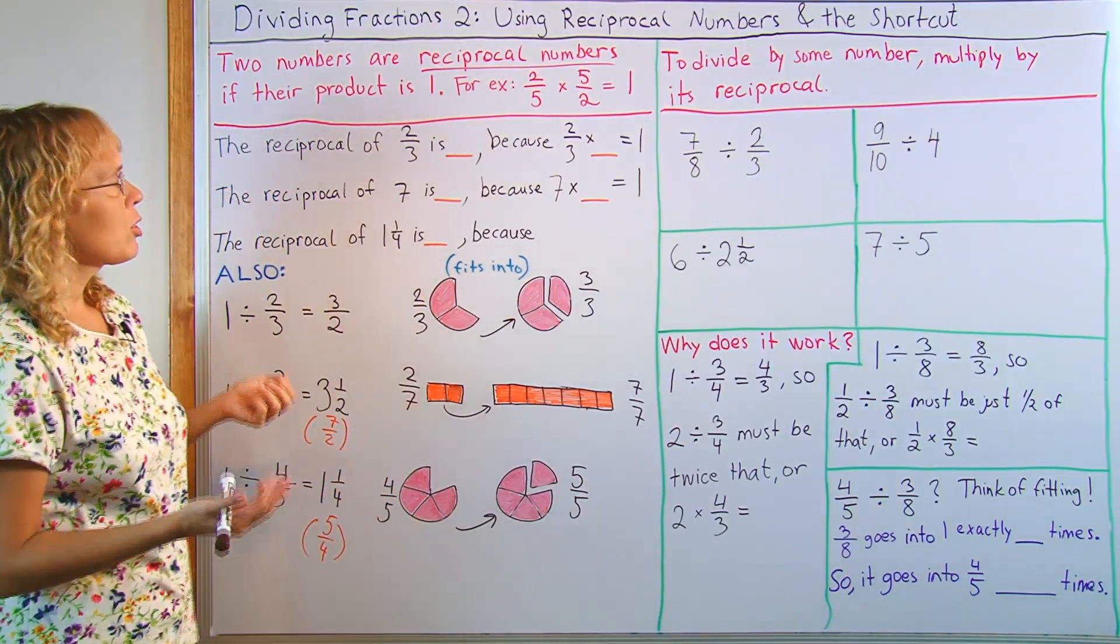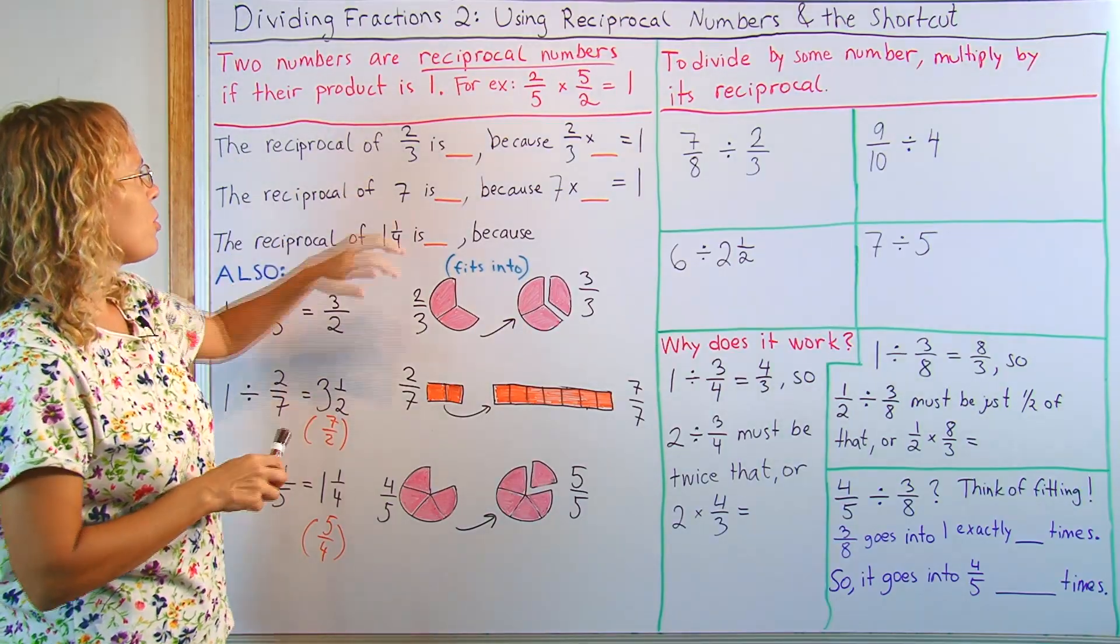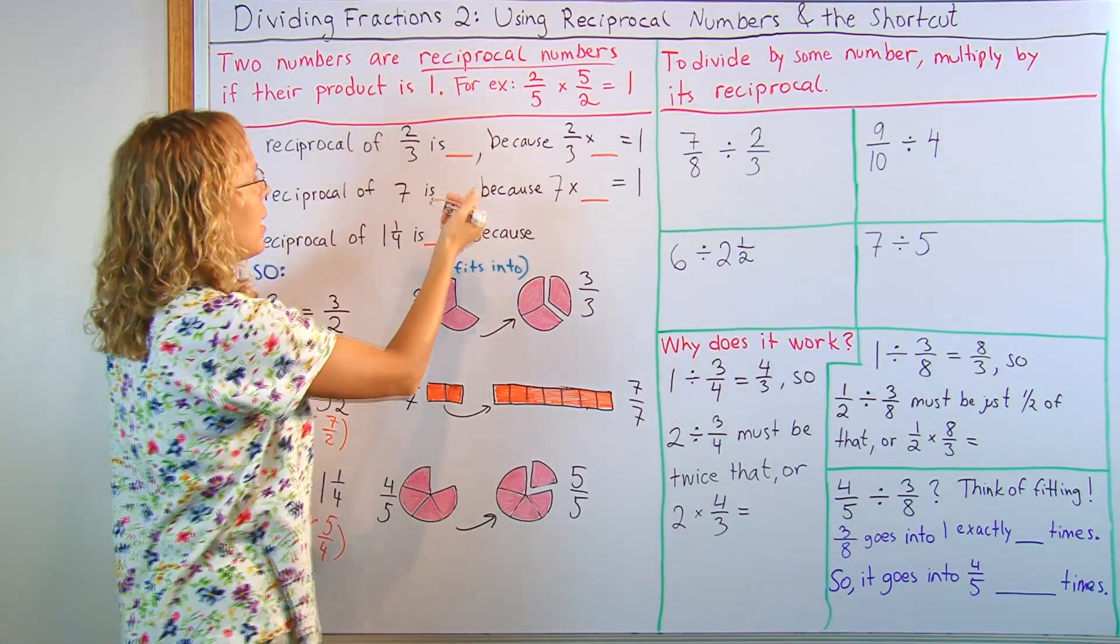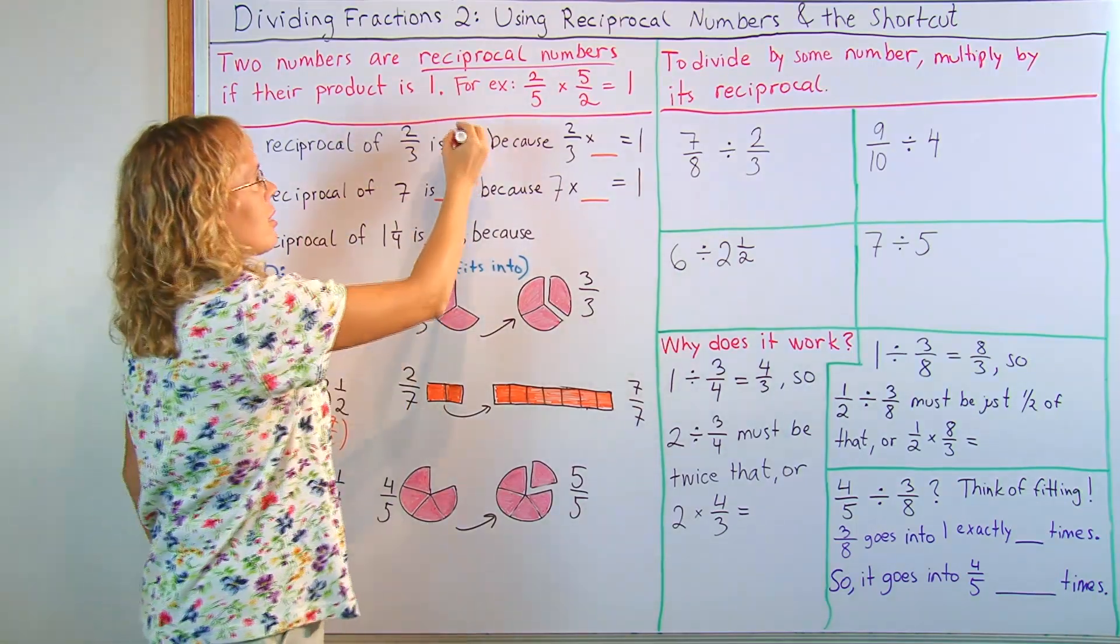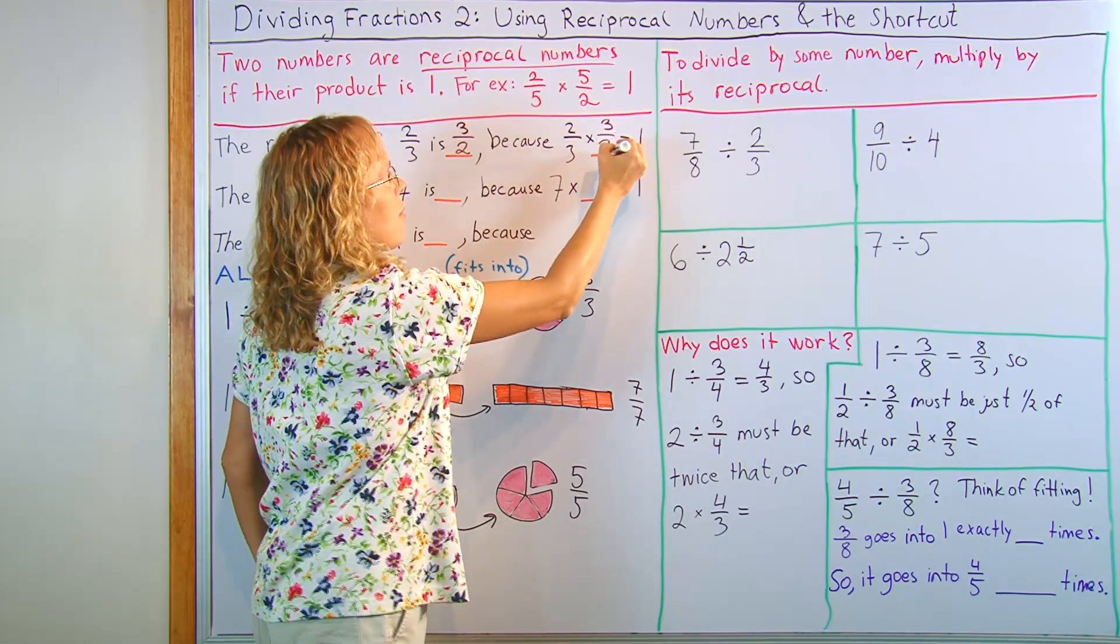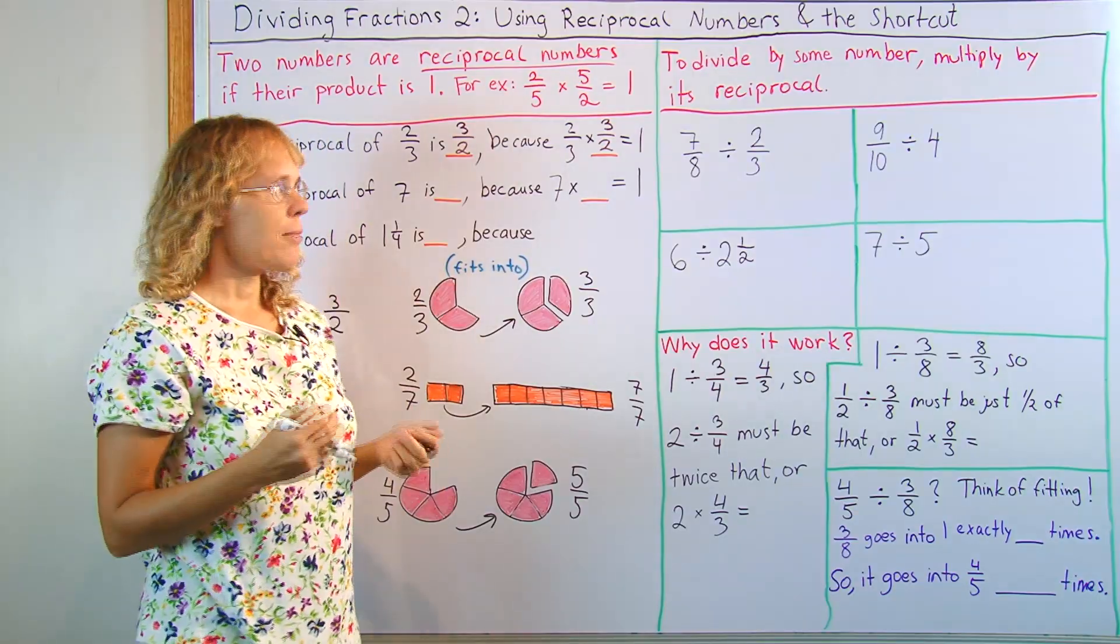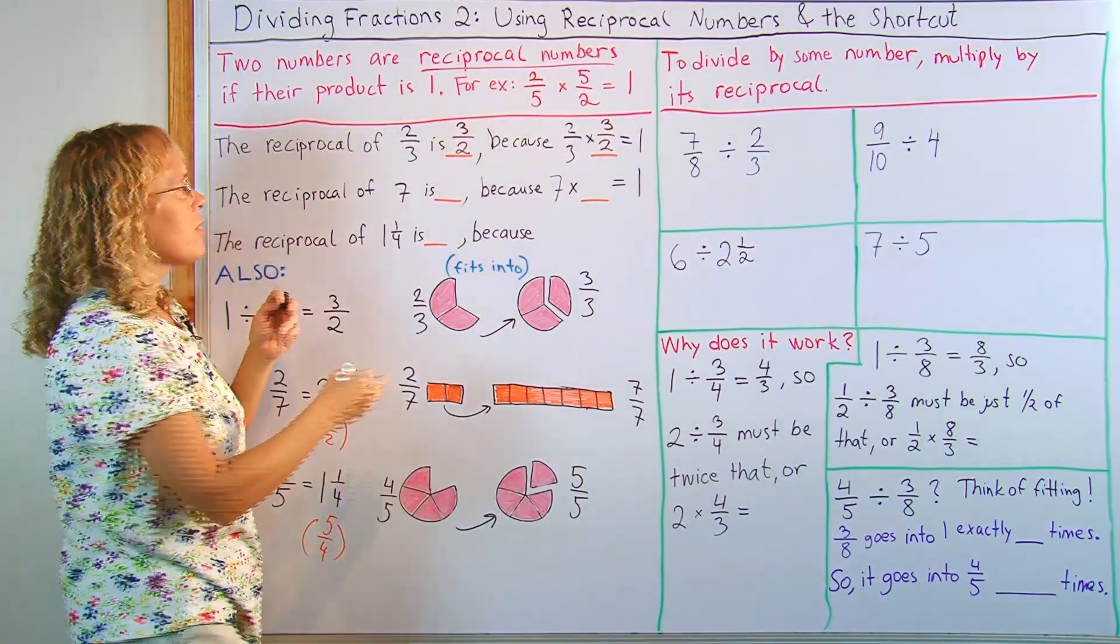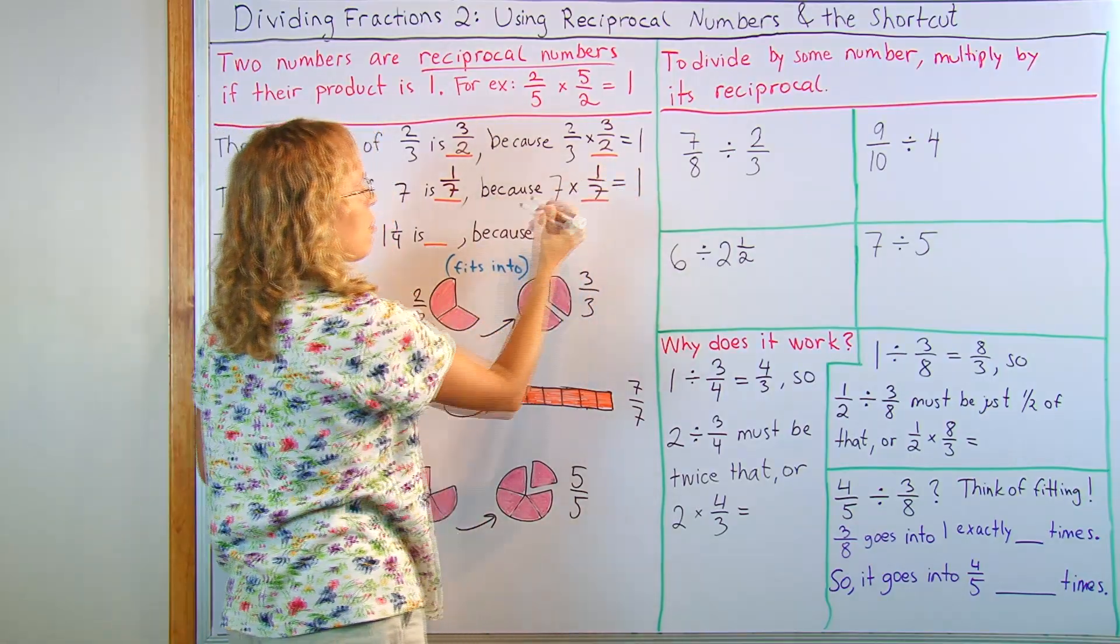And so, of course, students usually need to practice this just a little bit. Like, the reciprocal of two-thirds is, basically, you flip this. You flip the numerator and denominator. And so three over two is its reciprocal. Because if you multiply, you would get six over six, which is one. Or the reciprocal of seven is one-seventh, like I mentioned, because seven times one-seventh is one.